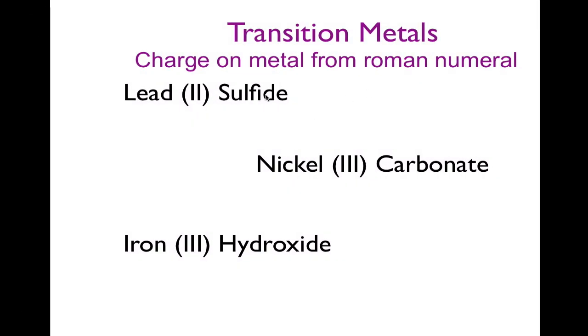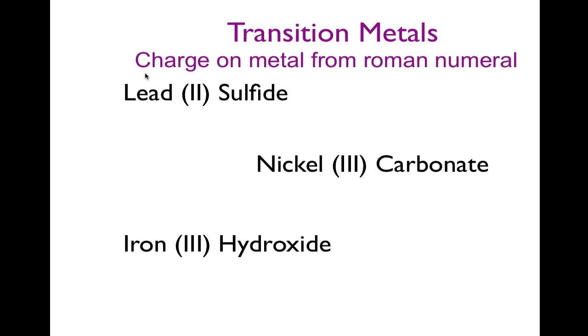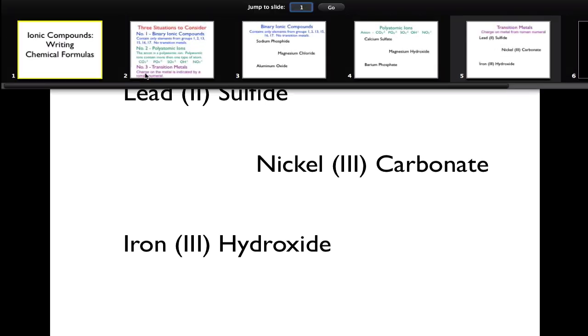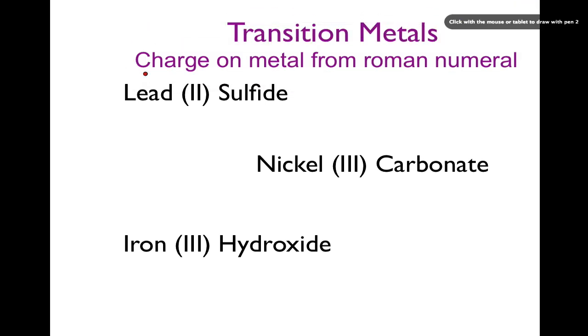Now we have our transition metals, and as we said earlier, the Roman numeral in front of the metal tells you the charge on the metal. So all I'm going to do is the same thing again. I'm going to put down that lead is plus 2. So I write down here plus 2. Sulfide is minus 2. I looked that up on my periodic table, and I know that the chemical formula is Pb, S, just like that. Again, I have 2 and a 2, and therefore it reduces to a 1 to 1 ratio of PbS, one of each.